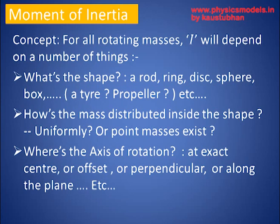Moment of inertia depends on: what's the shape — is it a rod, a ring, a disc, a ball, and so on? How is the mass distributed? Is it uniformly throughout the rod? In this case it is uniform. And the third question is: where is the axis of rotation? Is it perpendicular to the rod, or is it along the length of the rod, and so on?